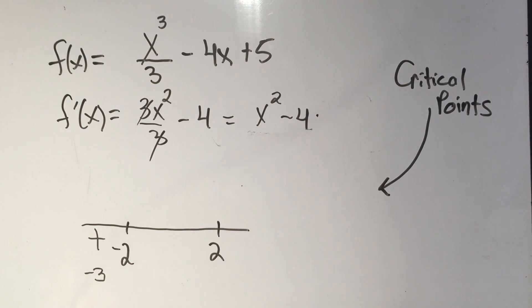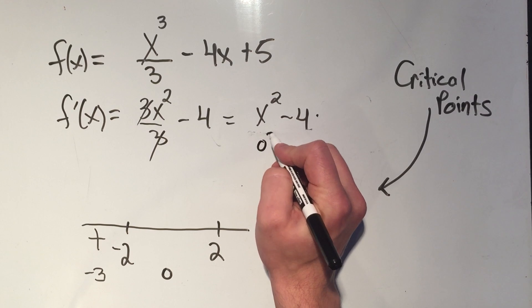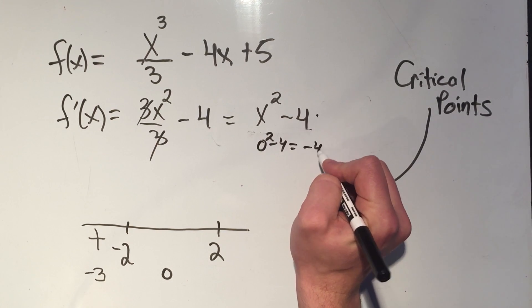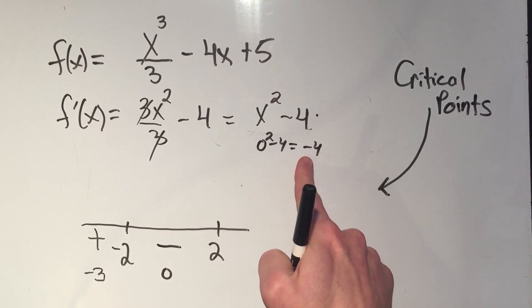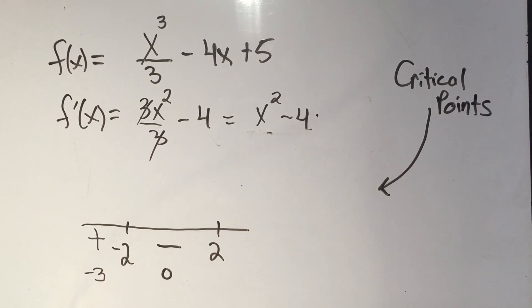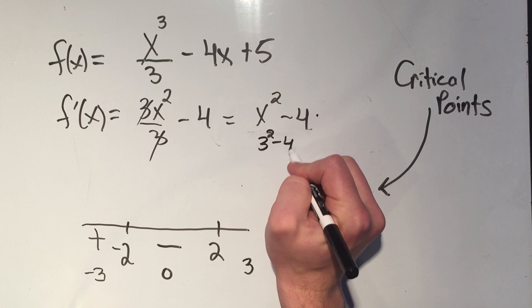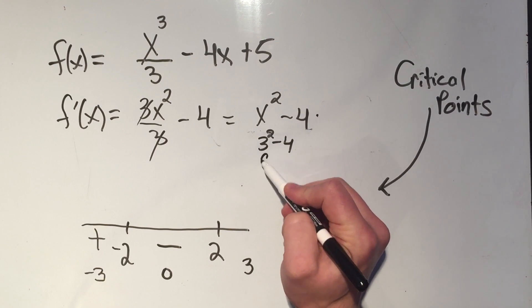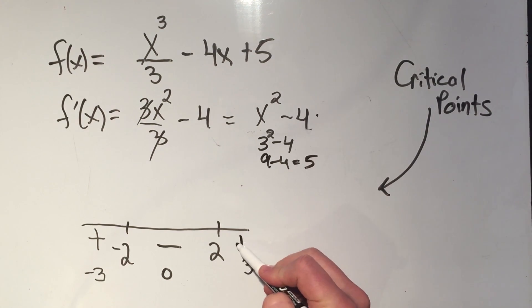Now I'm going to test the other intervals. So I need to pick something in between negative two and two. I can pick any number I want. Why don't I pick something easy like zero? Because if I plug in zero here, I'll have zero squared minus four. That'll just be a minus four. So I'll put a negative sign in there. I only care about the sign of this thing. My last interval, I just have to pick something bigger than two. Why don't I pick three? That'll be three squared minus four. Remember, I'm plugging this into the first derivative. Three squared is nine minus four is five again, and that's plus five. So I'll put a plus there.